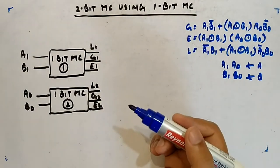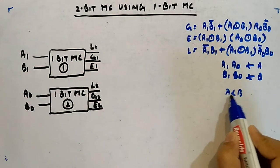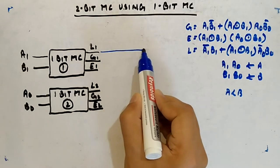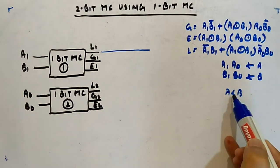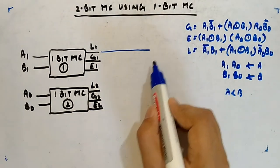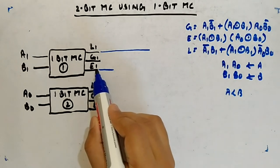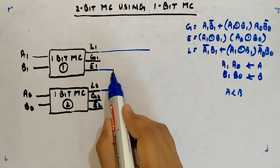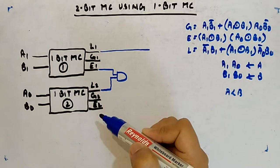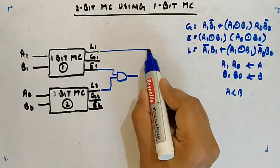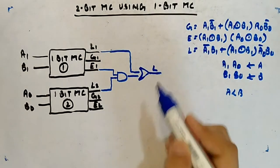When will the overall result be less? A is less than B either when A1 is less than B1 — meaning L1 is one — or when A1 equals B1 and A0 is less than B0, meaning E1 is one and L2 is one. Both of those must be true. These are fed into an OR gate to produce the overall L output.